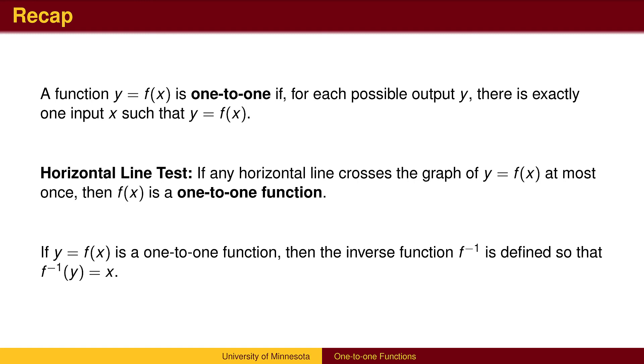To recap, if any horizontal line crosses the graph more than once, a function is not one-to-one, and we will have a problem finding an inverse function. If each horizontal line crosses a graph only once, then the function is a one-to-one function.